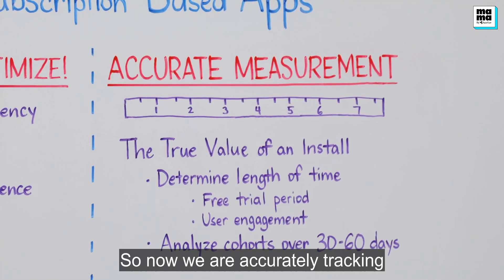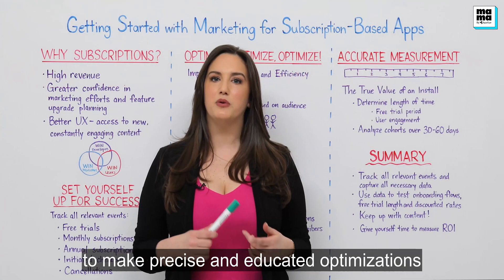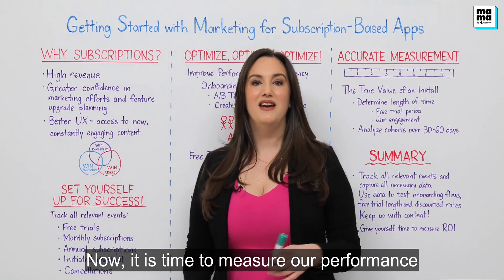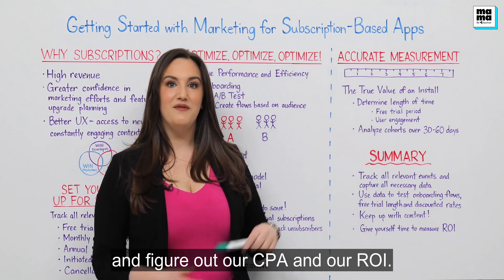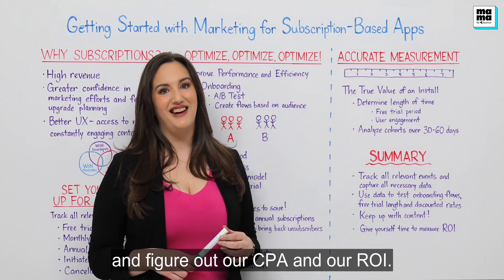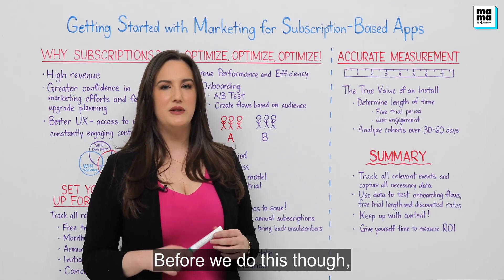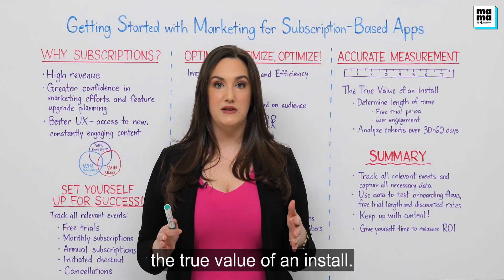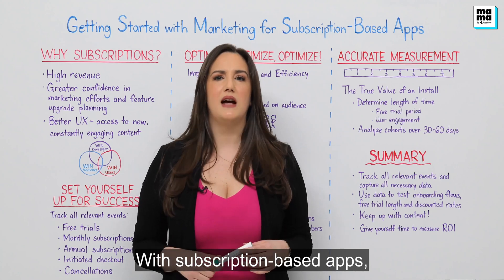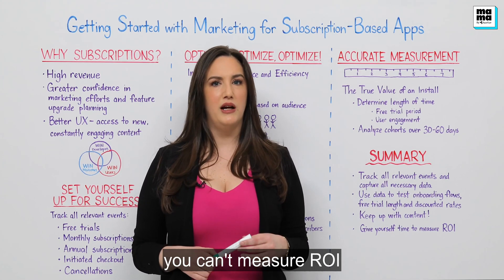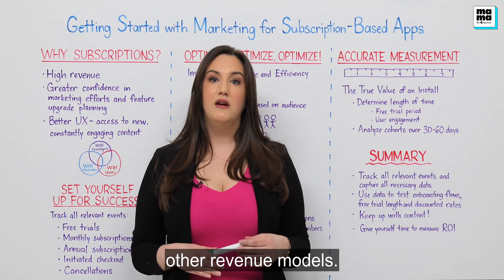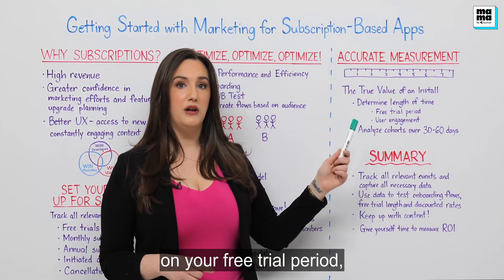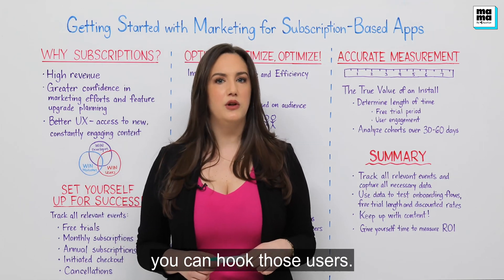Now that we are accurately tracking all of our data and using it to make precise and educated optimizations within our app and campaigns, it is time to measure our performance and figure out our CPA and ROI. Before we do this, we first have to determine the length of time it takes to see the true value of an install. With subscription-based apps, you can't measure ROI and LTV the same way you would with other revenue models.